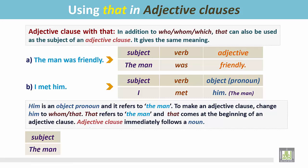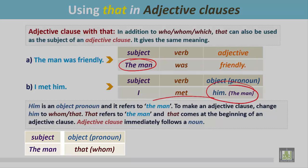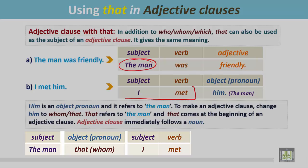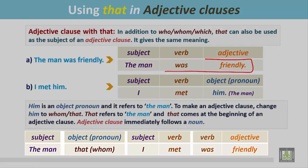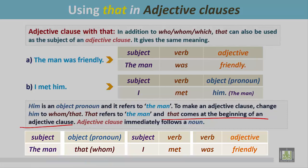An adjective clause immediately follows a noun. See the answer. First write the subject from the first sentence — the man. Then the object pronoun is changed into 'that'. We can also use 'whom'. Then write 'I met' — the first part of the second sentence. And finally, write the remaining part of the first sentence: 'was friendly'. That comes at the beginning of the adjective clause, and it immediately follows the noun, the man. The man that I met — that is the adjective clause.